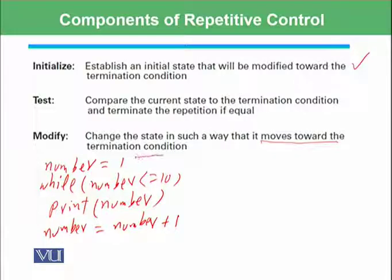So basically the first one is the initialization. We establish an initial state that will be modified toward the termination condition. So we are modifying this at the last statement. Here we have written plus 1. We have not written here minus 1. So what will happen if we write here minus 1? This means we are not moving toward the termination condition because it's already 1.